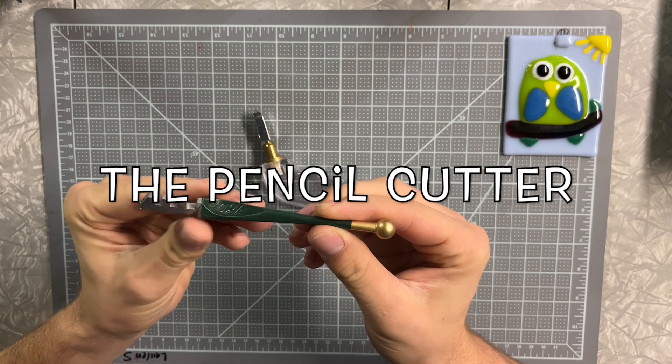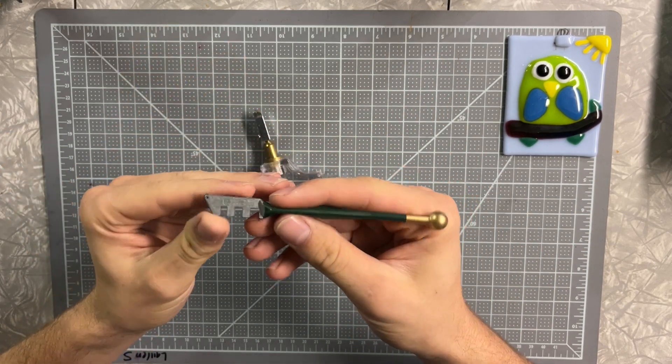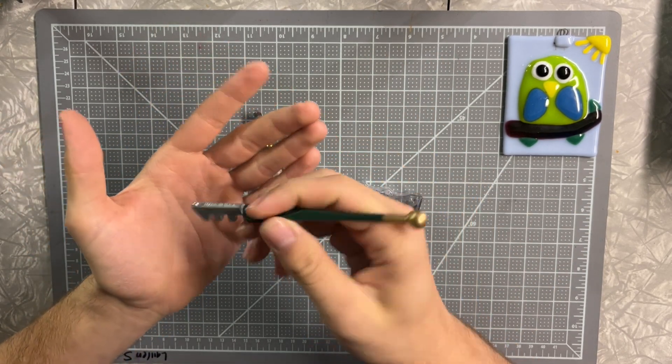We'll start off with this smaller green one here. This is called a pencil cutter, hence the name. It looks kind of like a pencil and you actually hold it just like a pencil when you're cutting glass.